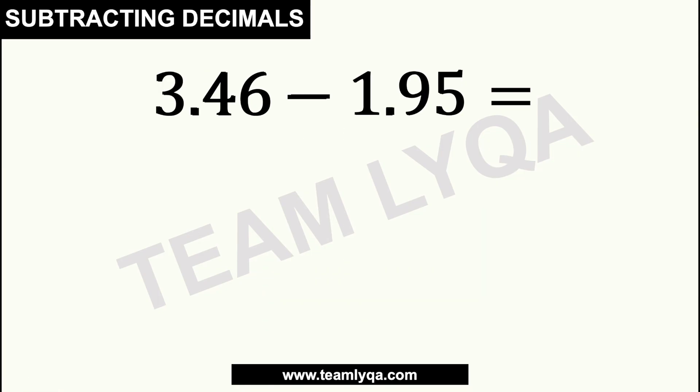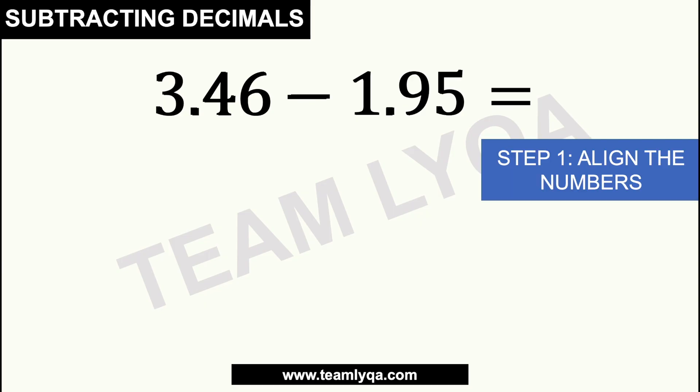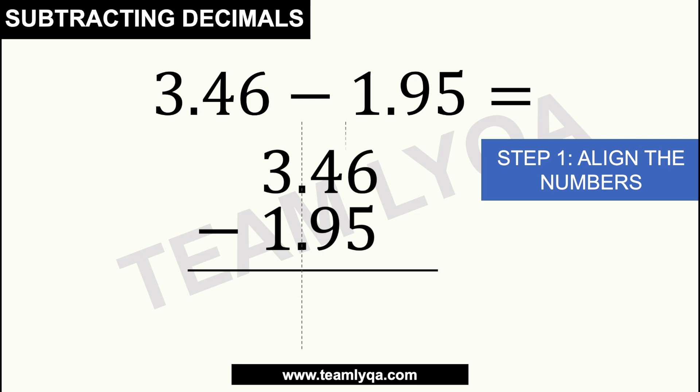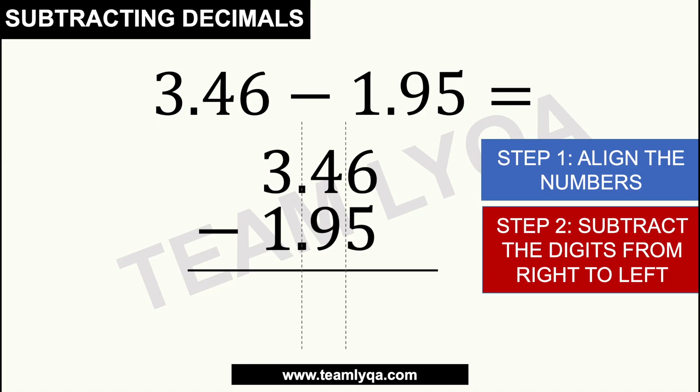Now, paano naman kung ganito yung ating problem? You have 3.46 minus 1.95. Now again, first step is to align the numbers. So you just put yung 3.46 dyan, minus. Tapos yung 1.95, itatapat natin yung decimal point here. And eto rin, isusunod natin. And now we have to start solving. Now again, parang per column pa rin yan. We are going to start with the right side. We have to subtract yung nasa right na column muna. So 6 minus 5, wala naman masyadong problema dyan. That is just 1. Now dito tayo sa second column, magkakaroon ng struggle. Sabihin na natin, if you're not too comfortable with subtracting numbers. Pero kailangan lang natin balikan yung rules natin sa regular na subtraction.